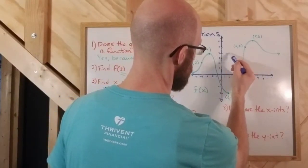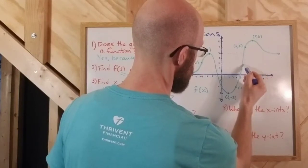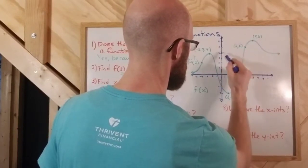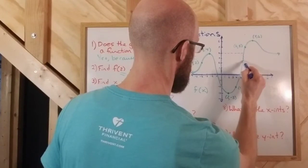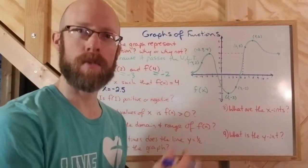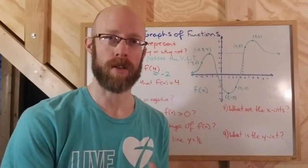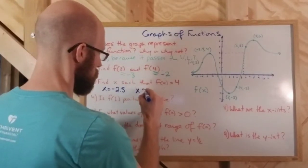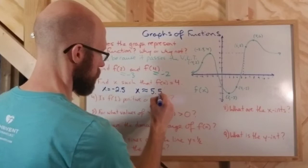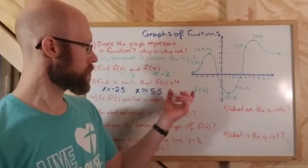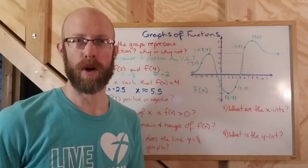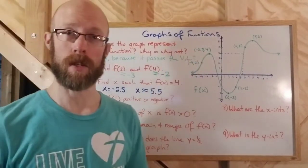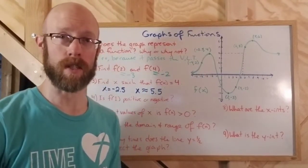It's somewhere between 5 and 6, so I'm going to estimate that to be about 5.5 — x is approximately 5.5. On some of these, if the graph isn't super clear, we're just going to use an approximate. At other points where the point is clearly stated on the graph, you can use an exact value.